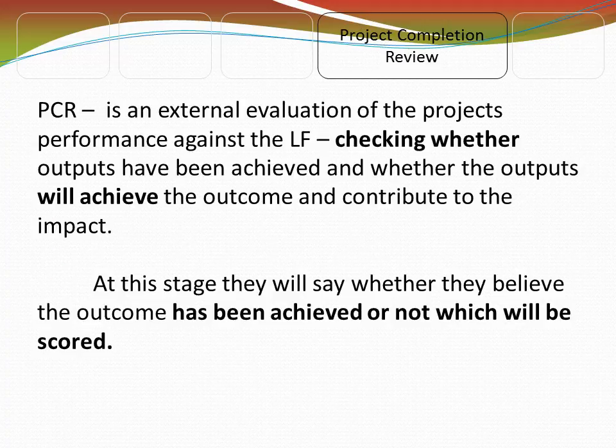The next type of evaluation is called the project completion review. As the name suggests, it occurs at the end of a project. It looks at whether the outputs have been achieved, but also whether the outputs will achieve the outcome and contribute to the impact. At this stage, they will say whether they believe the outcome has been achieved or not, and this will be scored using the scoring mentioned — A double-star, A-star, and A.